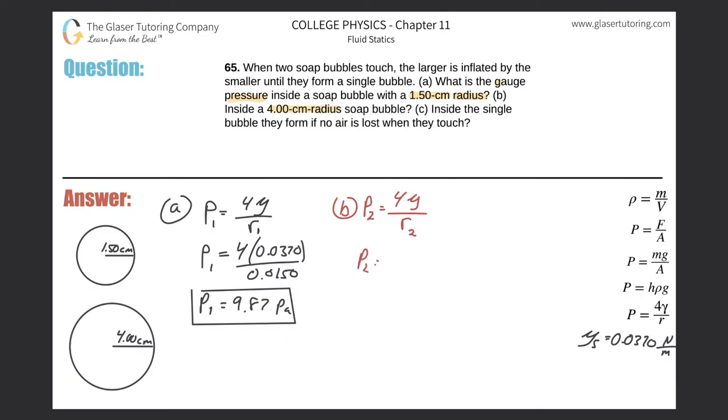Now all we have to do is plug everything in. Four multiplied by the surface tension of 0.0370, all divided by the radius - I'm going to convert that into meters again. Plug it in: 4 times 0.037 divided by 0.04, and we have a value of 3.70 pascals.